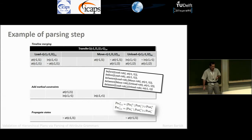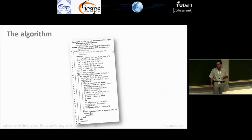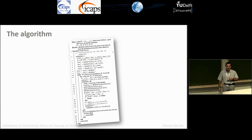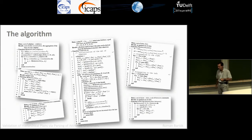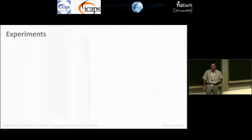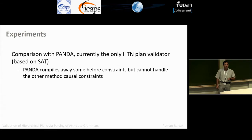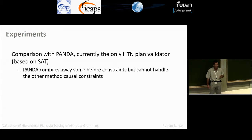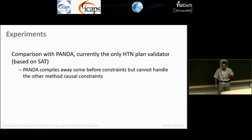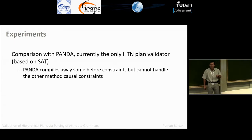There is a real algorithm — you can find it in the paper — along with many auxiliary procedures like merging slots. We already implemented it and compare it with the only other validator for HTNs, which is part of the PANDA system. That validator is based on translating the validation problem into SAT, presented last year at ICAPS. As far as we believe, PANDA is not complete — it does not cover the 'between' constraints, and some other constraints are compiled away, so you're not validating the original plan but the plan after compilation.